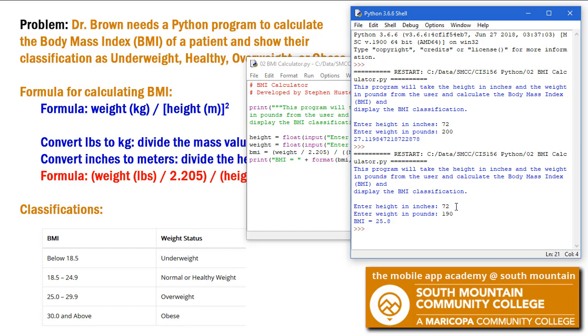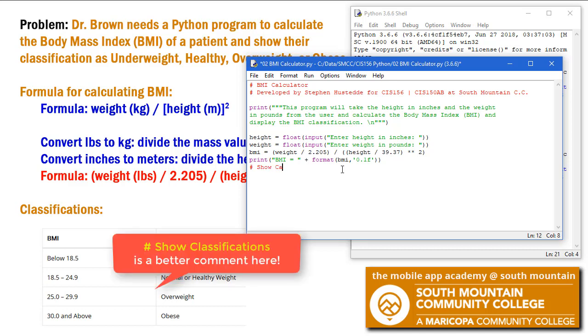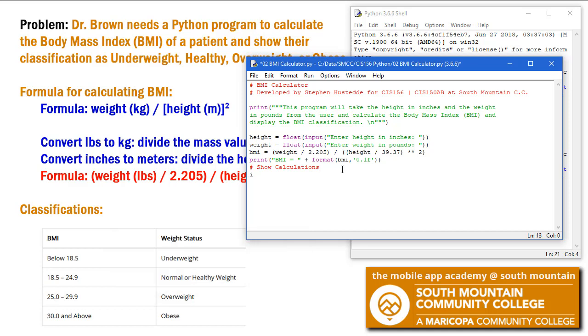Now I need to add to that the classification of are they underweight, healthy, overweight, or obese. So let's go back to our program. So I have a little comment here of show calculations. It's a good idea to put comments in your code. If BMI is less than 18.5,